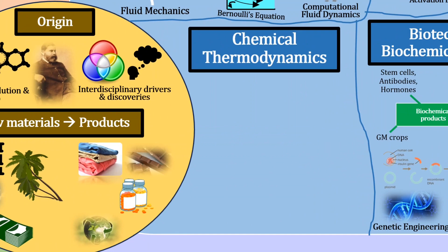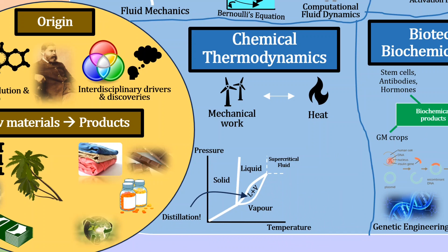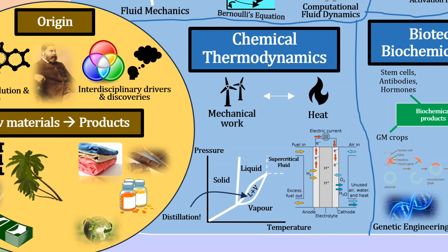Closely linked is chemical thermodynamics. One use for this is describing how heat and mechanical work can be efficiently interconverted in a system, like in an industrial process or a domestic heat pump. We can also use it to understand the phases that exist when mixing substances together — do we have phase separation like with oil and water, or one uniform liquid? This affects how we process substances and separate mixtures. We can also apply thermodynamics with mass transport phenomena to design electrochemical systems like batteries.